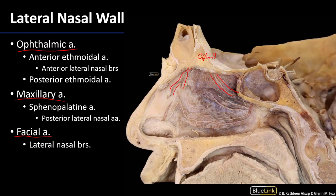From the maxillary artery, here is the sphenopalatine artery coming through and giving rise to posterior lateral nasal arteries — there are two nice robust ones visible here. It is in this area that posterior nosebleeds tend to originate.